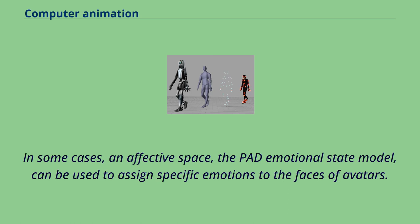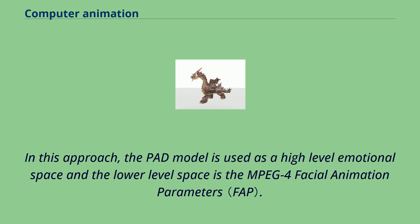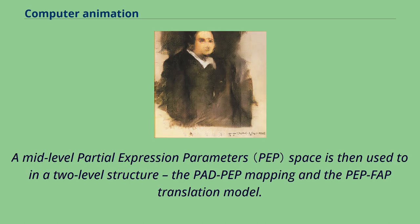In some cases, an effective space — the PAD emotional state model — can be used to assign specific emotions to the faces of avatars. In this approach, the PAD model is used as a high-level emotional space and a lower-level space is the MPEG-4 facial animation parameters. A mid-level partial expression parameter space is then used in a two-level structure: the PAD-PEP mapping and the PEP-FAP translation model.